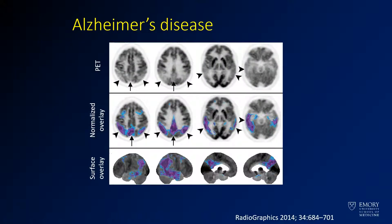This image from Radiographics shows Alzheimer's disease. In the top row you have FDG PET, and you see areas in the parietal and temporal lobes with decreased glucose activity. After normalization to an atlas, purple and blue areas show what is decreased from normal, with a surface overlay confirming decreased activity. Involvement of the parietal and temporal lobes is what you're looking for.